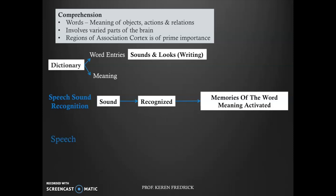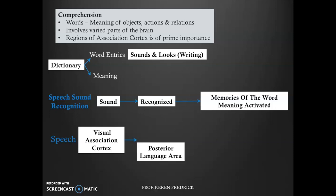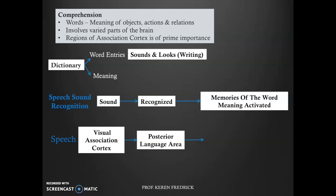If you are looking at production — say you want to say something — it happens in reverse. The visual association cortex enables you to have a visual image of what you want to say, which in turn activates the posterior language area, giving you the representation or meaning of the words to put across. The message is then transferred to Broca's area, which leads to grammatical sentences and pronunciation of the actual word. Speech production is the exact reverse of speech sound recognition.